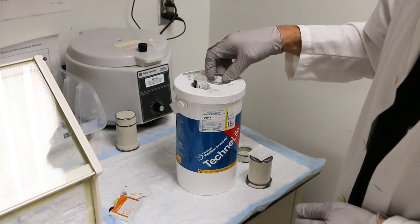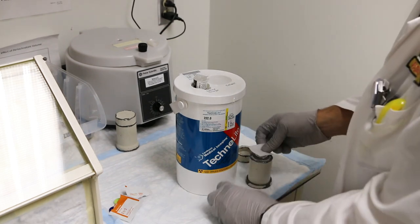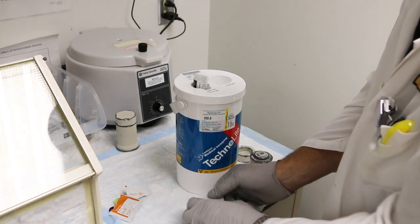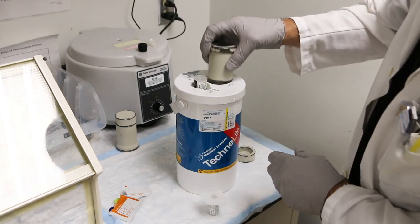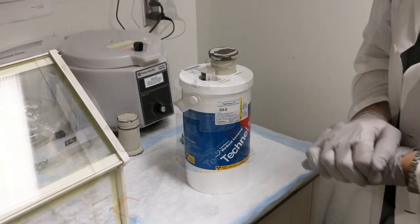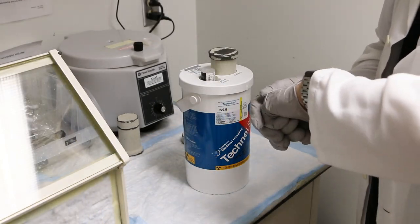Remove the collect needle seal vial from the collection port and set to one side, keeping sterile with an alcohol swab. Place the collection vial on the collection port. The elution process begins and lasts for about 5 minutes.